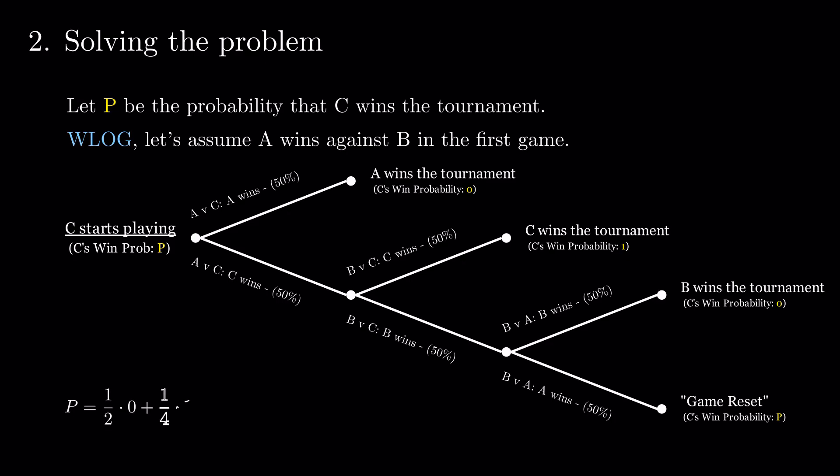We can write an equation for P now. Getting that P equals 2 over 7. As expected, this is less than a third, meaning that C is indeed disadvantaged.